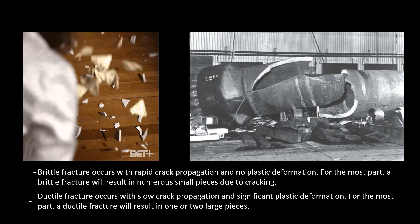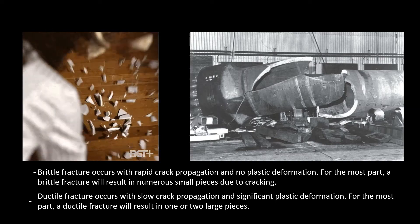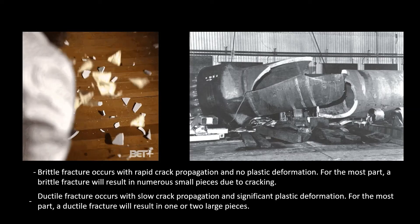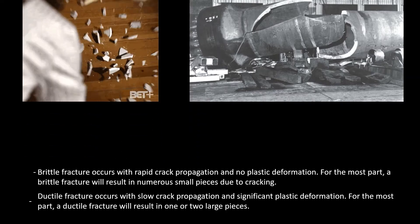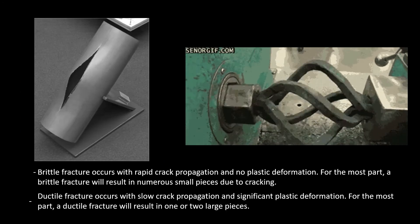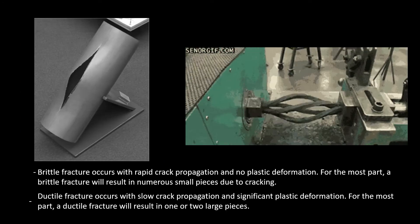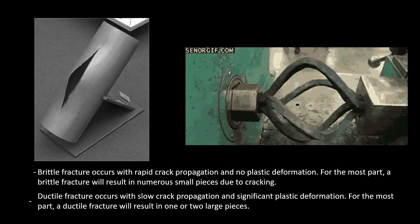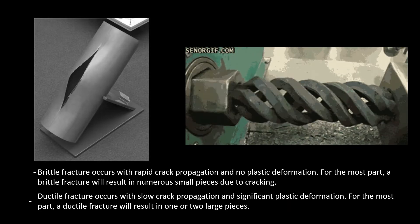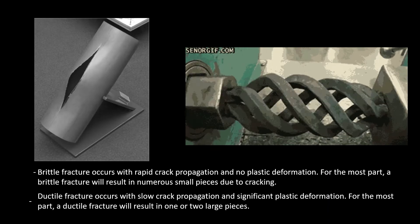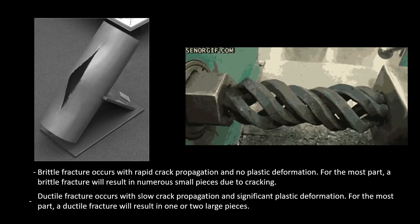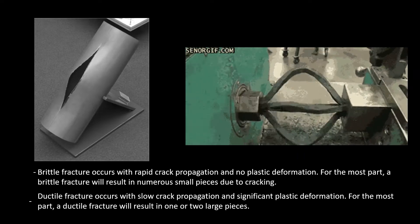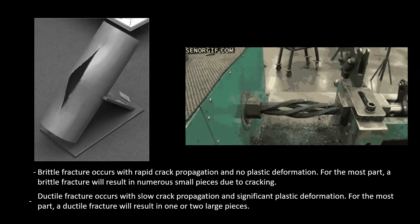When a brittle fracture occurs, cracks rapidly propagate and fracture occurs without plastic deformation. Steel is normally a ductile material — it is able to undergo a large amount of plastic deformation before fracturing. Steel does not normally undergo brittle fracture. However, some ductile materials will experience brittle failure under three conditions.